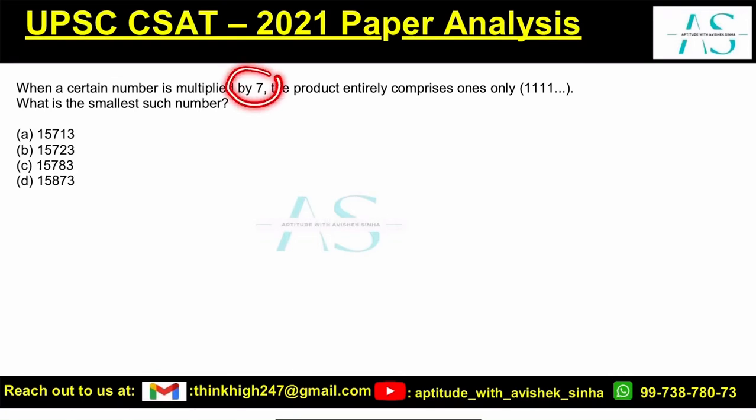When a certain number is multiplied by 7, the product entirely comprises only of 1's, and what is the smallest such number? You have 4 options here.